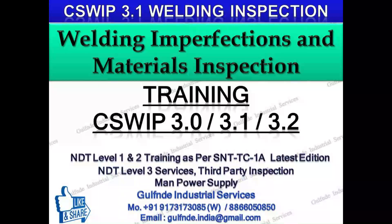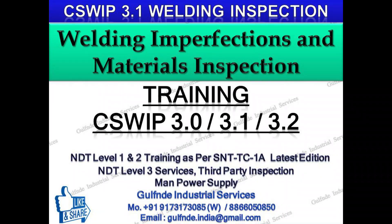Welcome friends. Today we will study about CSW IP 3.1 training. In this video, we will study Section 3: Welding Imperfections and Materials Inspection. When this presentation has been completed, you will have a greater understanding of the types of defects during visual inspection. You should be able to assess the defect against acceptance criteria and accept or reject accordingly.